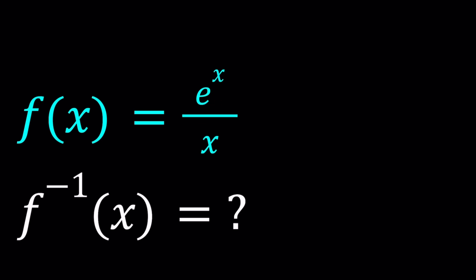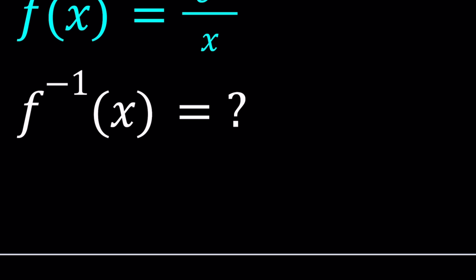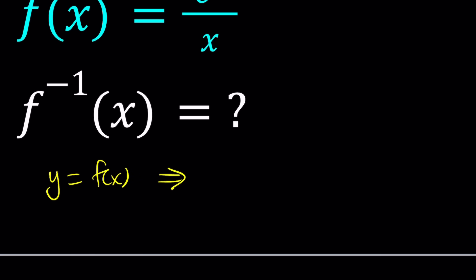So what does that mean to find the inverse of a function? We're looking for a rule that will basically undo what is done with f of x. In other words, if y equals f of x, then f inverse switches x and y. So we can say that x can be written as f inverse of y.